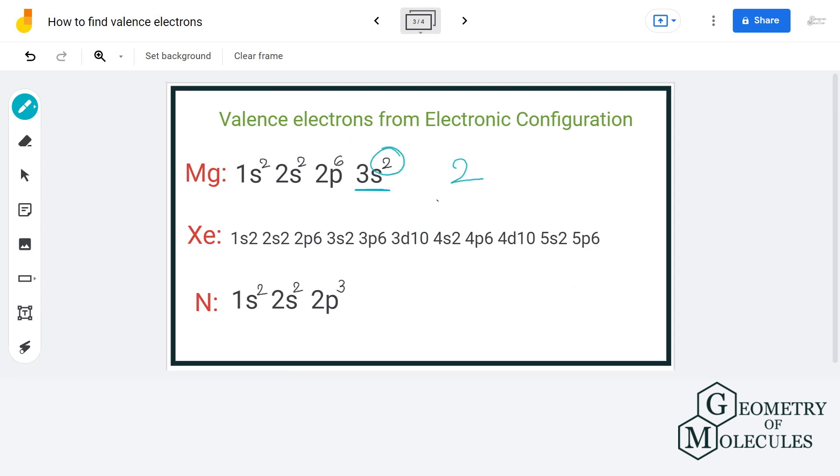Here the last subshell in xenon in which electrons are entering is 5p, but the last shell is shell number five. So the total valence electrons becomes two in 5s subshell and six in 5p subshell that equals to eight. Try the next example by yourself and write down your answers in the comments.